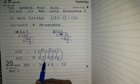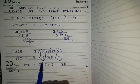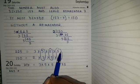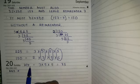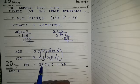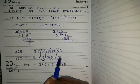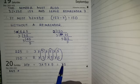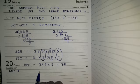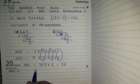Now mark the common factors for 225 and 150: one 3 is common, one 5 is common, and another 5 is common. So HCF equals 3 into 5 into 5 — one 3, one 5, and one 5 from each — which equals 75.